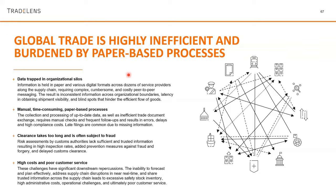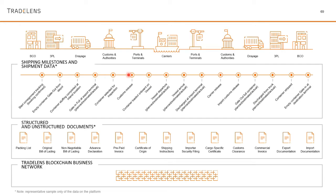TradeLens is a business network intended for global trade participants. Trade means any supply chain transaction involving buying and selling. For example, if you go on Amazon and buy goods, you are the buyer and Amazon is the seller. The product is packaged and shipped to your delivery address, and you receive an invoice — called an EDI (Electronic Data Interchange) document — along with your product.